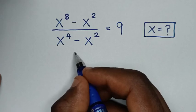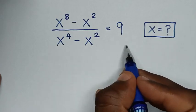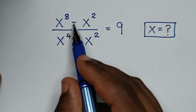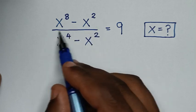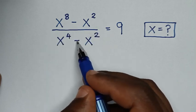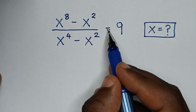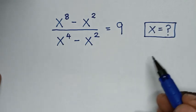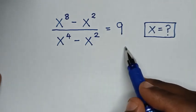Hello, you are welcome to solve this math problem, which is x power of 8 minus x power of 2 over x power of 4 minus x power of 2 is equal to 9. To find the values of x from this equation.